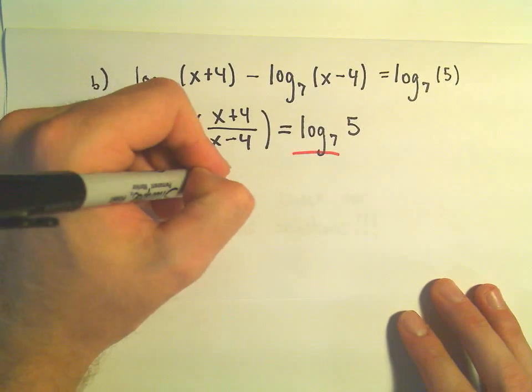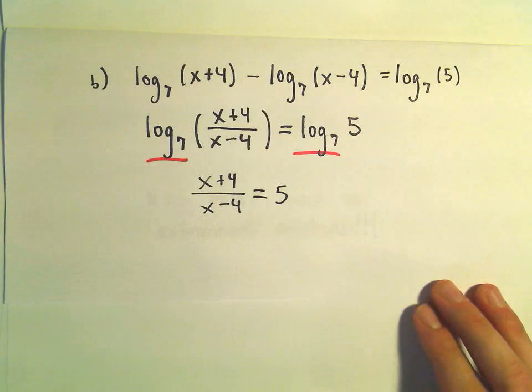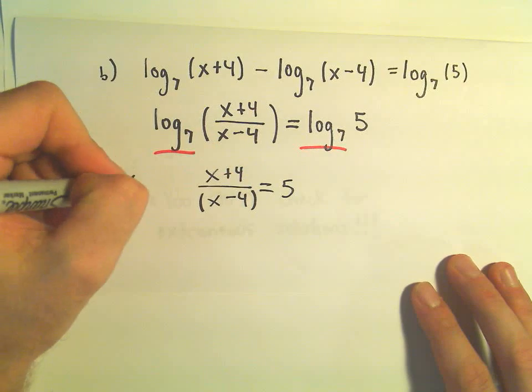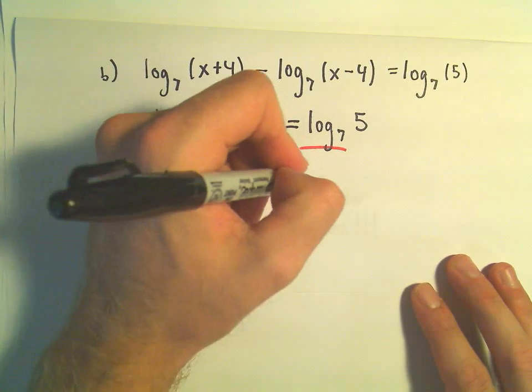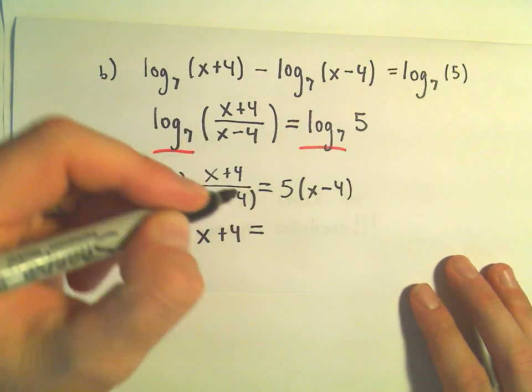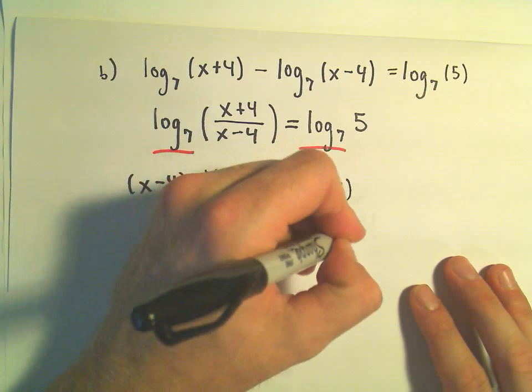So this says x plus 4 over x minus 4 equals 5. And to simply get rid of the x minus 4, I'm going to multiply both sides by x minus 4. So on the left side we would be left with our numerator, x plus 4. On the right side I'm going to distribute, that would give 5x minus 20.